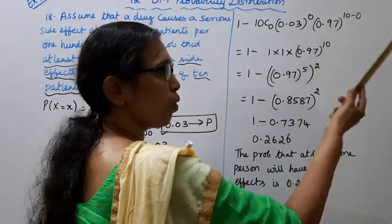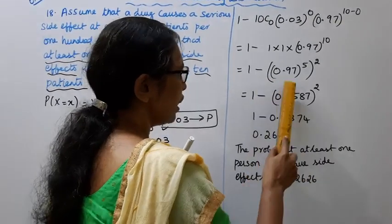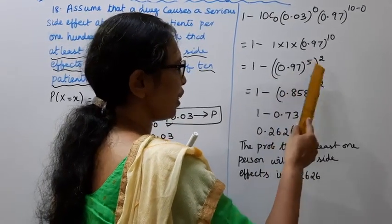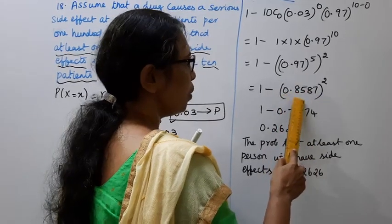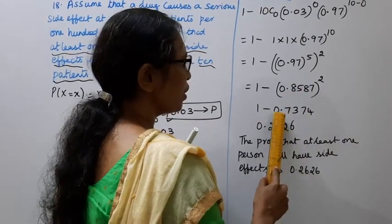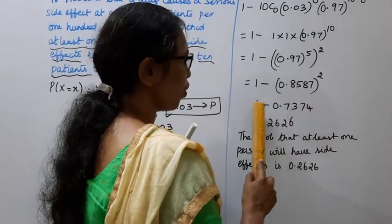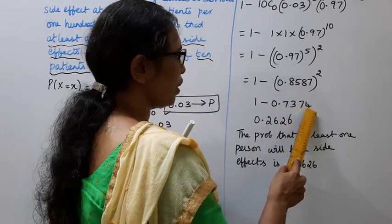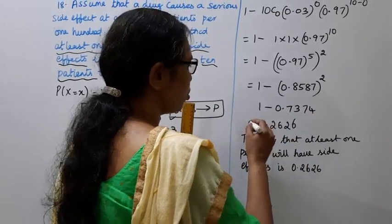I look at 0.7374. 1 minus 0.7374, it is 0.2626. The probability that at least one person will have side effect is 0.2626.